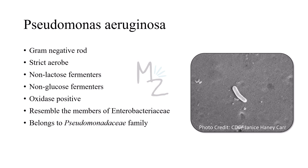Pseudomonas aeruginosa is a single bacterium belonging to the group termed Pseudomonas. Pseudomonas are gram-negative rods that resemble members of Enterobacteriaceae but differ in that they are strict aerobes, deriving their energy only by oxidation of sugars, not by fermentation. Because they do not ferment glucose, they are termed non-fermenters, in contrast to Enterobacteriaceae which do ferment glucose.